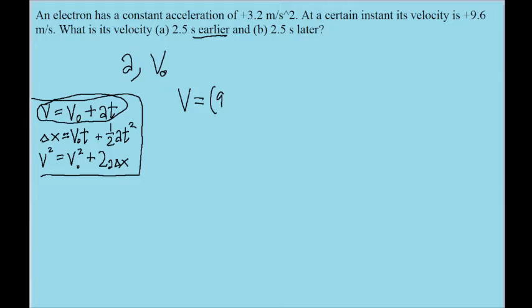So if our initial velocity is 9.6 meters per second, and the acceleration is given to us 3.2 meters per second squared, and we're talking about a time earlier, then we can take 2.5 seconds and make it negative. This will give us the information about the time before the snapshot we're given.